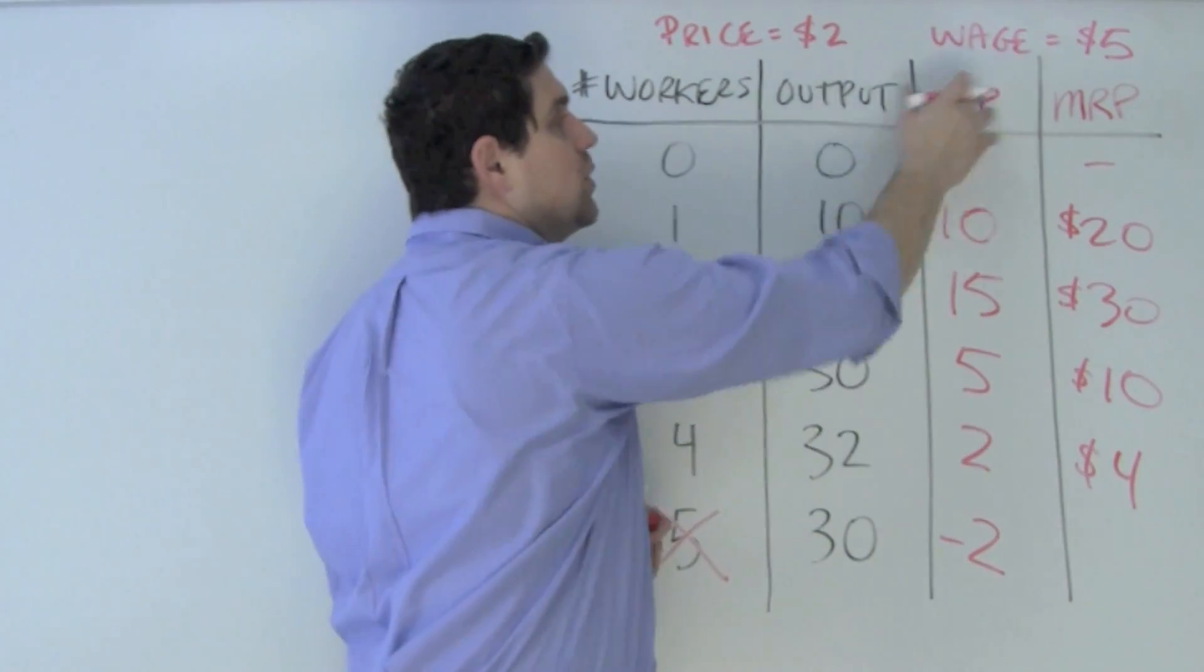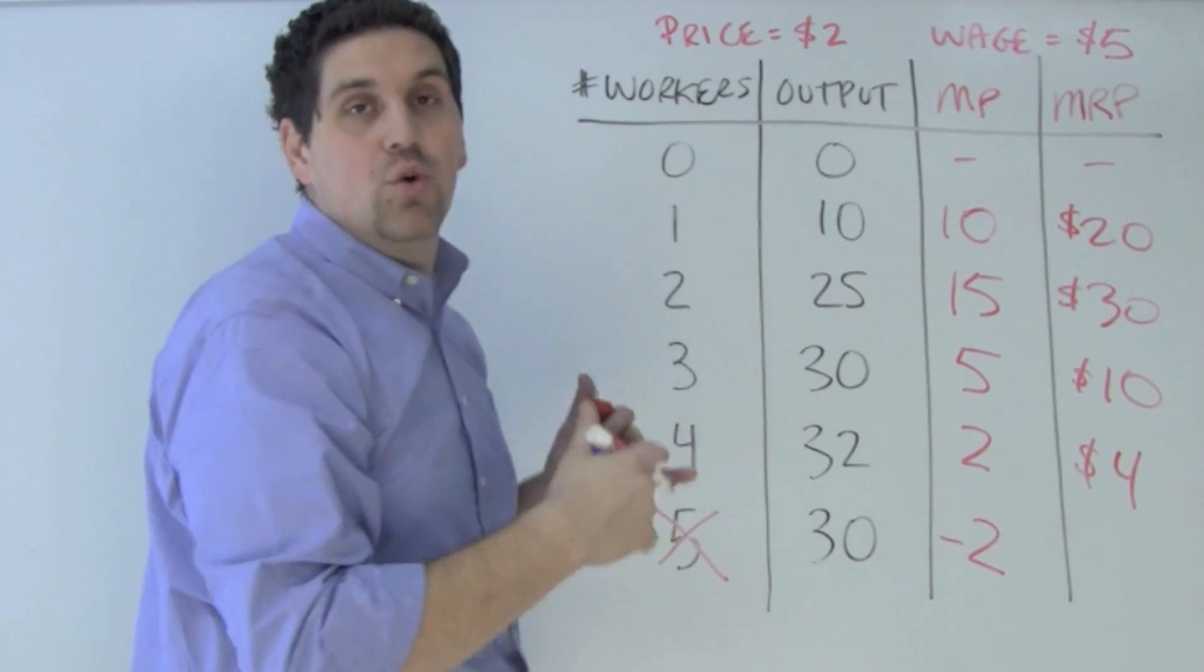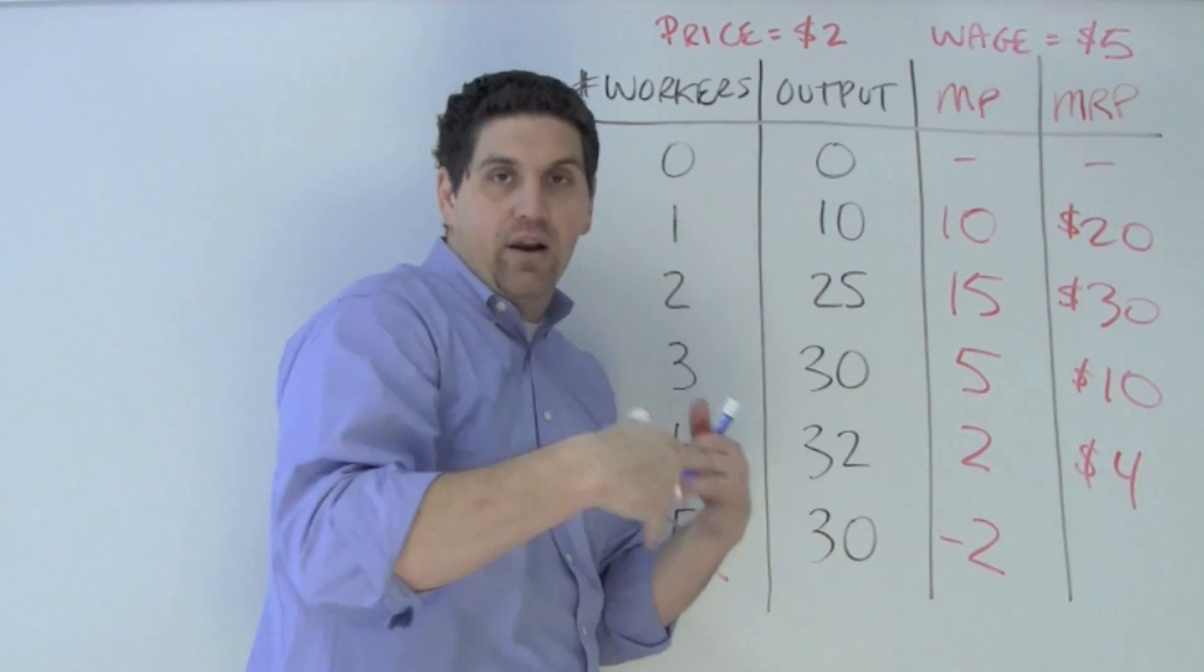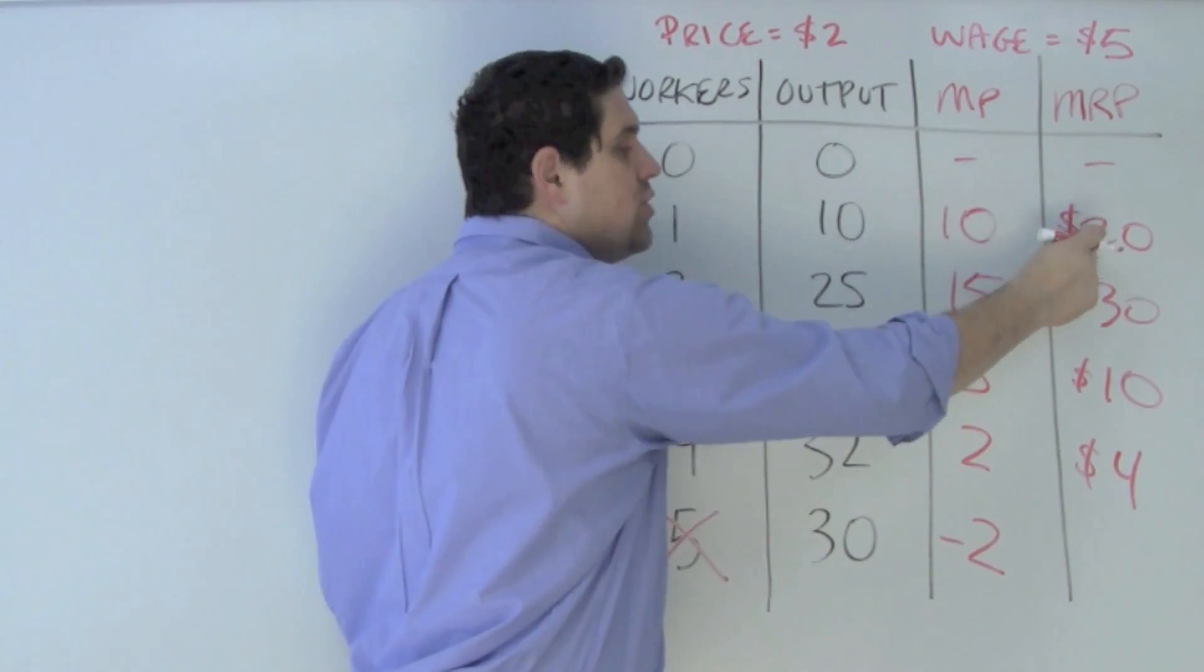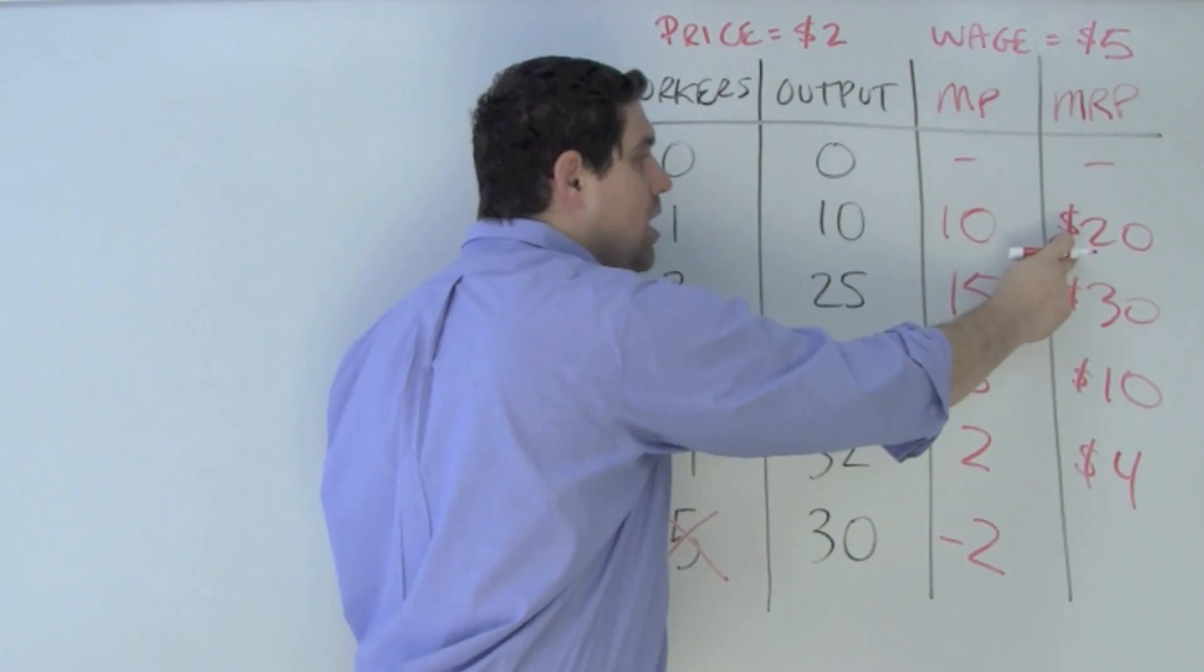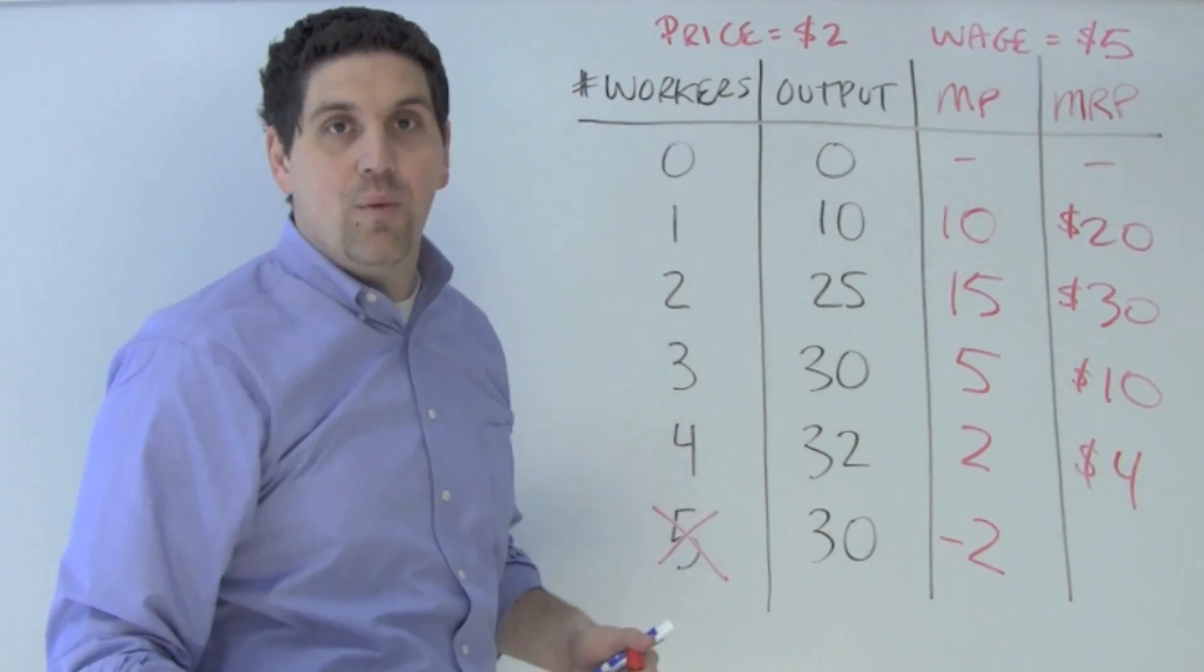Now this question gave us the wage, which is 5, which represents the marginal resource cost, the additional cost of hiring another resource. Now if the additional revenue generated from that resource is $20, but the additional cost is $5, would you hire that worker? Yes.